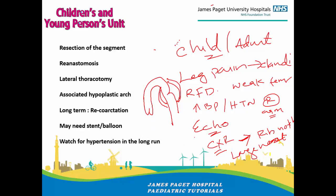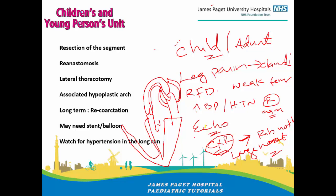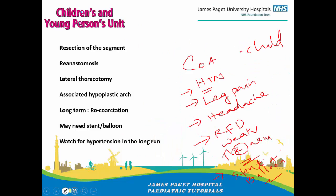You would also see cardiomegaly on the X-ray because the left ventricle is working harder to push past the obstruction, causing LV thickening. However, these X-ray findings are not diagnostic — just things to keep in mind when thinking about coarctation in a child or adult. That brings us to the end of the talk; hope you found it useful, thank you for watching.